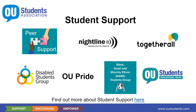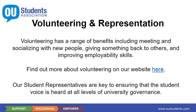The OU Student Association has three groups based on students with different needs. We have the Disabled Students Group, we have OU Pride which is the LGBT+ group, and we also have a Black, Asian and Minority Ethnic Group. These are run by students for students. We also have our own charity, which is the OU Student Educational Trust, and this charity is offering support to current students who are going through financial hardship.